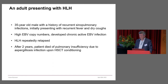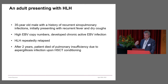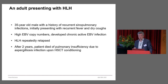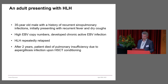Just over to another story we've been working on, recently submitted. This is an example of a later-onset HLH patient — a 35-year-old male with a history of recurrent sinopulmonary infections who initially presented with recurrent fever and dry cough. He had high EBV copy numbers and developed a chronic active EBV infection, which is associated with very poor prognosis, and then had HLH that repeatedly relapsed. Unfortunately, after two years the patient died of pulmonary insufficiency due to aspergillosis infection in the run-up to conditioning and transplant.